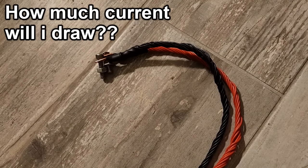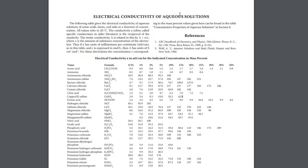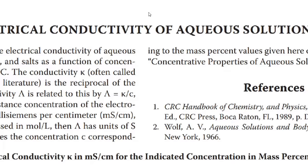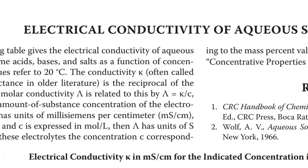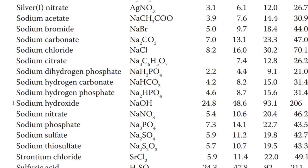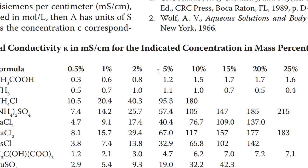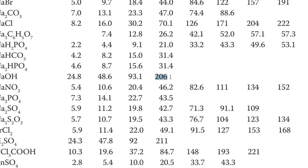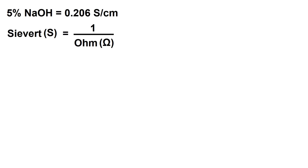After a little bit of googling, I found this nifty chart that gave conductivity for a bunch of different solutions based on electrolyte concentration. Let's look at sodium hydroxide. The chart says that at 5% concentration, we'll get a conductivity of 206 millisiemens or 0.206 siemens per centimeter.